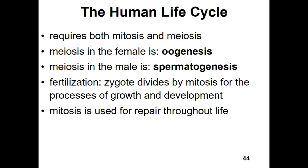Female meiosis is called oogenesis, and male meiosis is called spermatogenesis. We produce oocytes (egg cells) and spermatocytes (sperm cells), which come together through fertilization to produce a new diploid zygote that undergoes multiple mitotic divisions and specializations to produce the new organism.